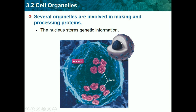Inside the nucleus is the nucleolus, which processes RNA to make ribosomes — and ribosomes are what actually make proteins. So the nucleolus, which is in the middle of the nucleus, makes ribosomes, which are another organelle.